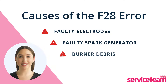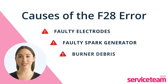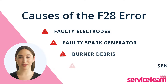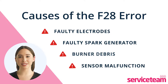Burner debris in a boiler is another cause for the F28 fault code. Even a small amount of debris, such as carbon buildup, can block the burner and prevent ignition. Additionally, boiler sensors are essential for safety and efficiency — an F28 issue could indicate a malfunction in the temperature sensor, causing inaccurate readings needed for ignition or potentially faulty sensor wiring.